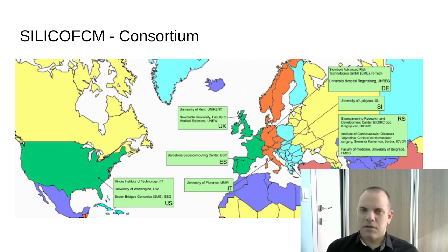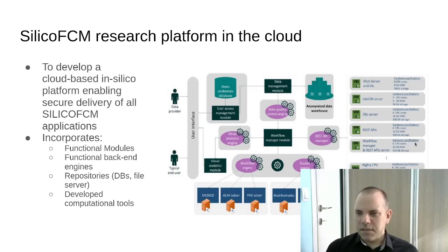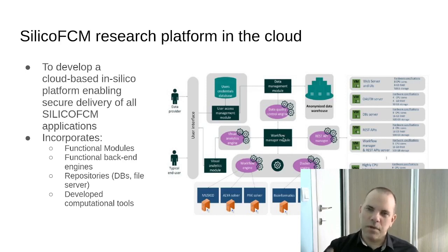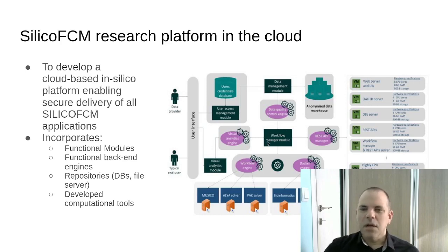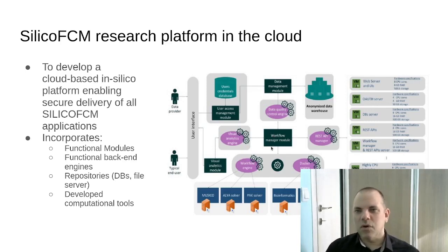Speaking technically and going to the internals of the platform, we have something like this. The central part of the Silico FCM platform is the Workflow Manager module. We opted for CWL and the Toil Workflow Manager to build the Job Manager upon it for two reasons. The first reason, in 2018 when we started, was that CWL was already pretty much accepted with a large community. The other reason is that we got SBG Genomics as a partner, who already supplied a number of workflows, so it was a natural choice to build the whole thing on CWL.